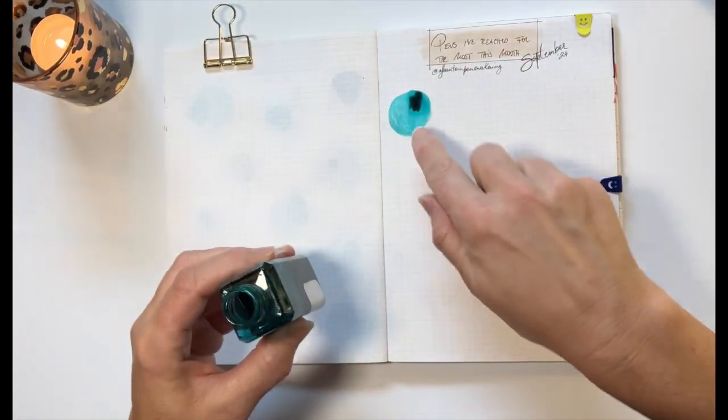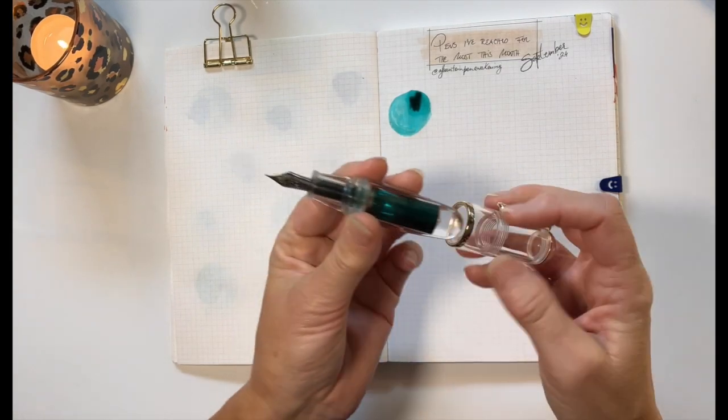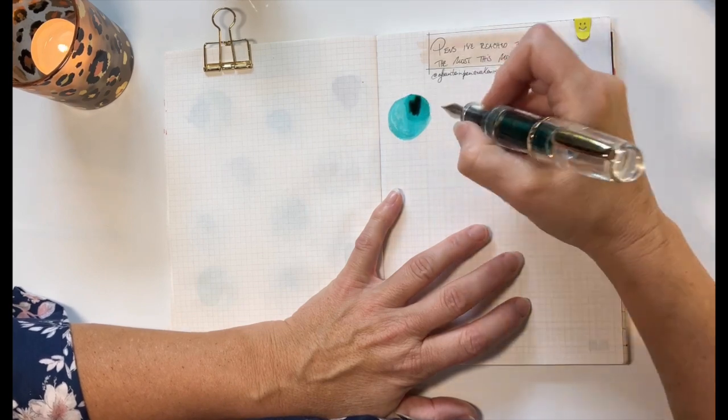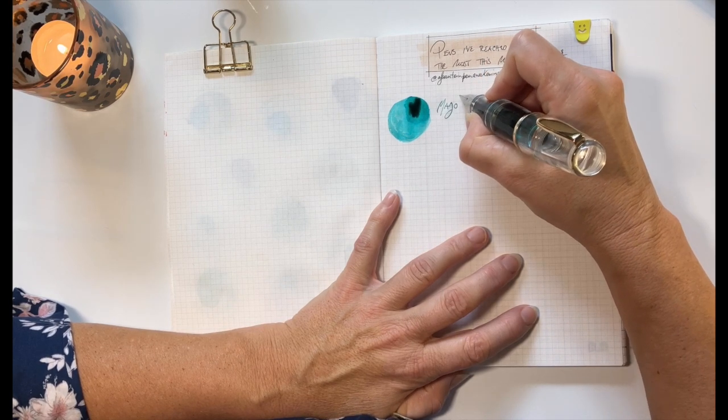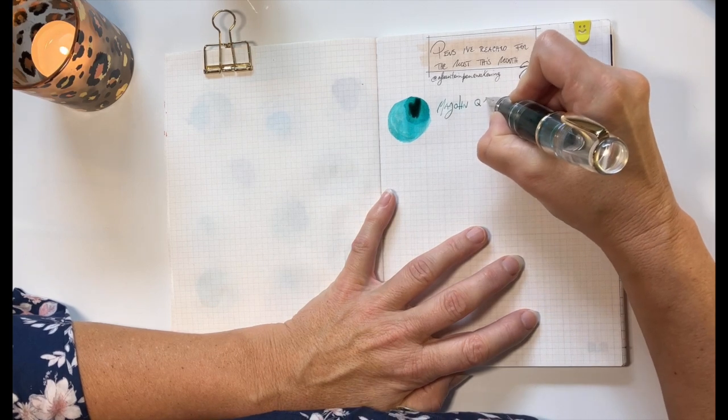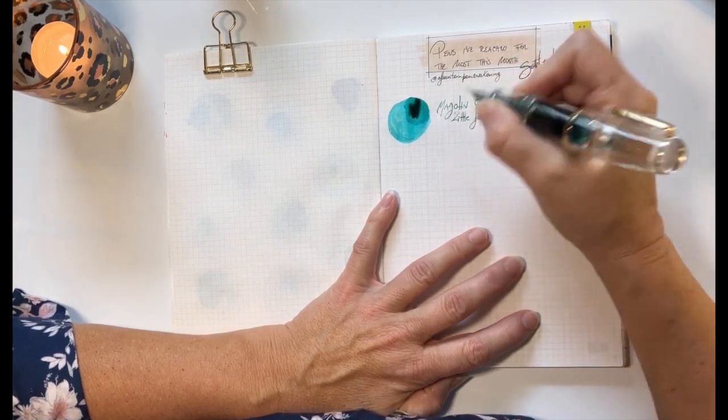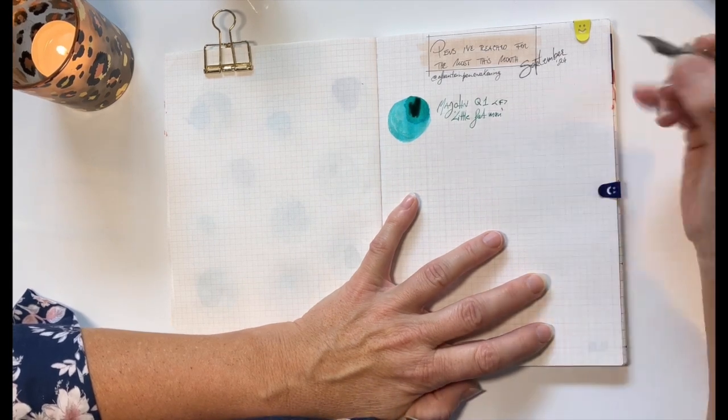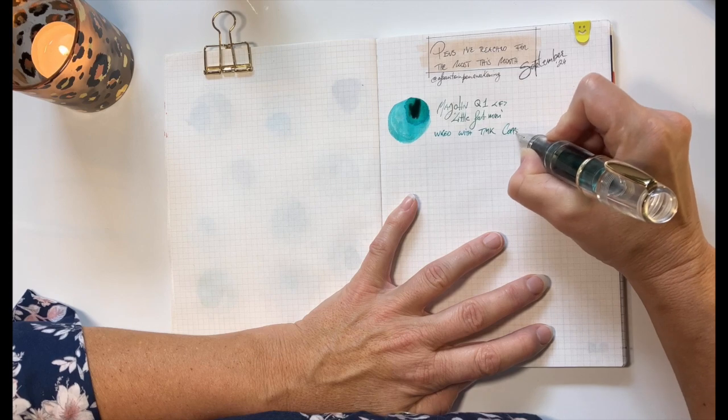This one kind of seems to, see how light that is, so this one kind of seems to just write super well. I've just topped it up too, I use like a little pipette, this pen comes with these little pipettes. So the Majohns tend to come with pipettes because they're eyedroppers obviously. So this fave combo is a Majohn, oh I keep forgetting how to spell Majohn, I keep wanting to spell it like Mahjong the game. So this is the Q1 with a fine nib, nicknamed a little bad man because of its girth, not because I'm going to offend anybody, please don't take offense, it's just what it's nicknamed. And this is inked with Troublemaker ink Copper Patina.